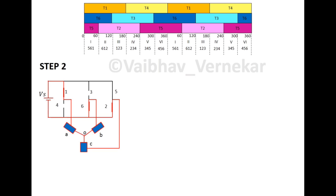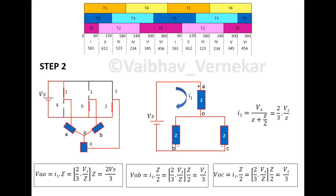Consider step 2 with thyristors 6, 1, 2 in conduction. The equivalent circuit in this case has A on positive bus, B and C on the negative bus. The current will have same magnitude however the voltage drop across the loads will vary as the parallel combination is across OB and OC this time.